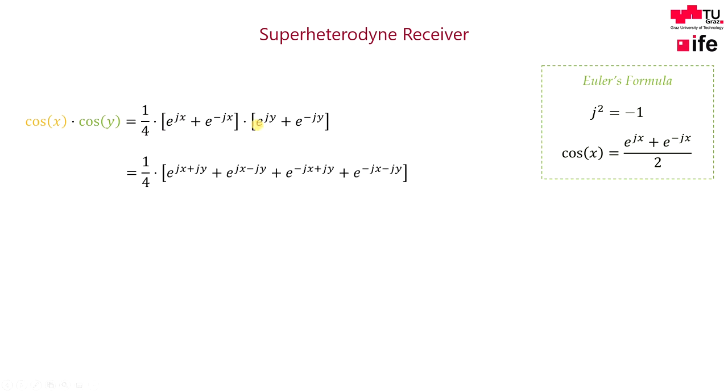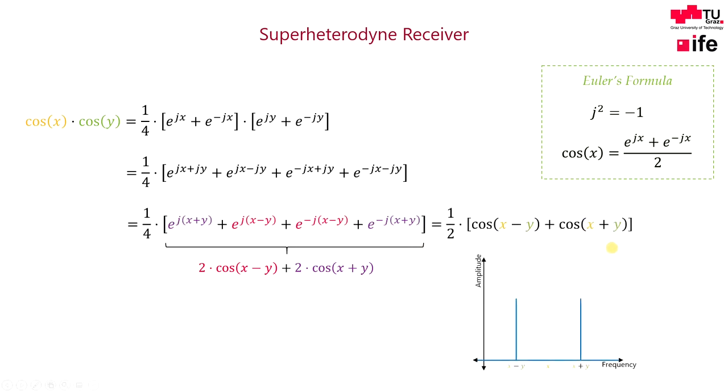After that we multiply both terms to obtain the second line here. Now we can rearrange those terms and write the exponential functions back in cosine functions. By doing this we get this final term. We can see that the result contains two frequency components.